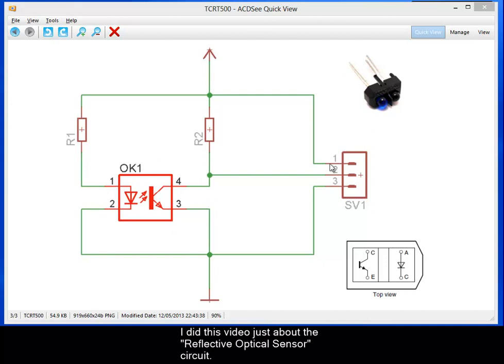Here we have the circuit, and here we have the TCRT 5000 device. Here we have a top view of this component.